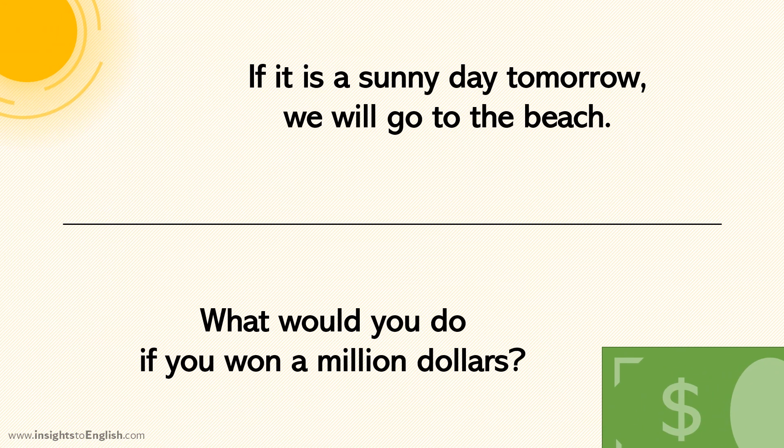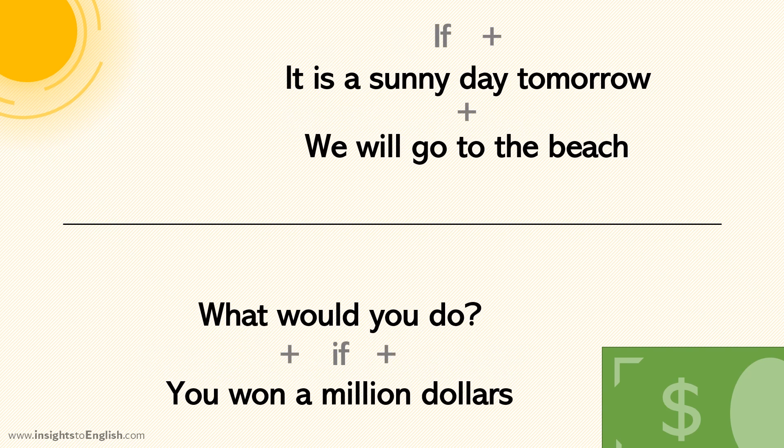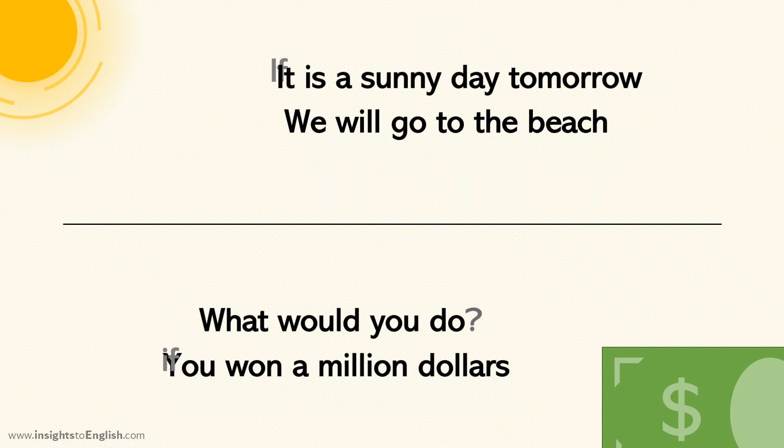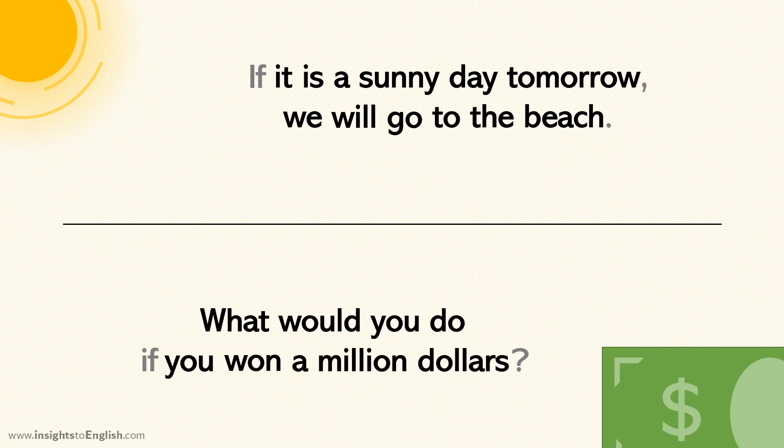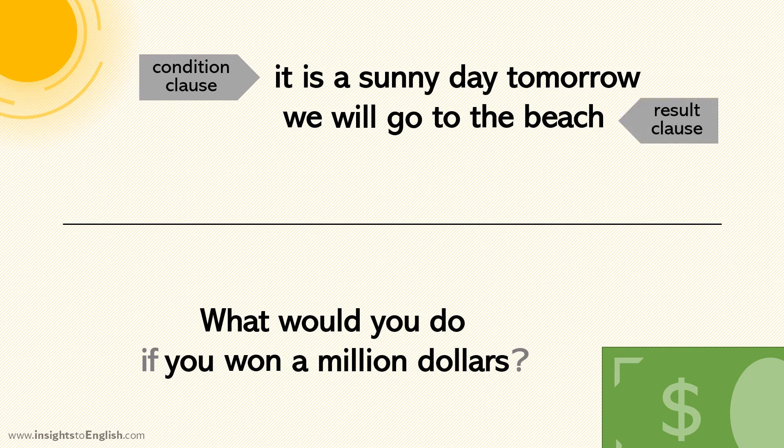Conditional sentences are typically composed of two clauses. What are those again? A clause is a group of words that can be a sentence by itself. So, what would you do is a clause. And sometimes, like with conditional sentences, we put two clauses together in the same sentence. Here, it is a sunny day tomorrow is the condition, and we will go to the beach is the result.